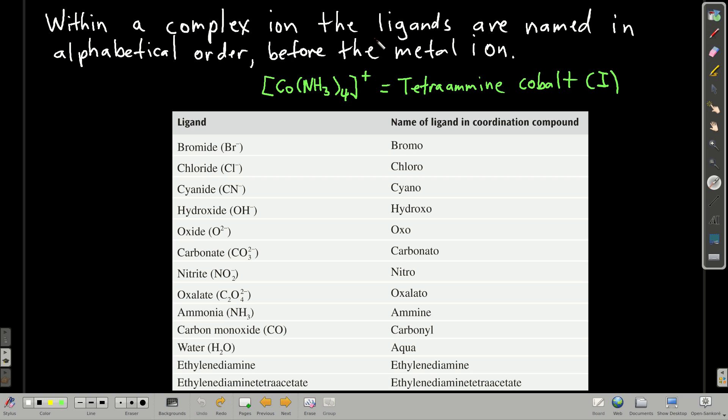Within the complex ion, you say the names of the ligands in alphabetical order and then you say the name of the metal ion. So the ligands come first, then the metal ion. In this complex ion here, the ligands are four ammonia amines. So we say tetramine cobalt(I).